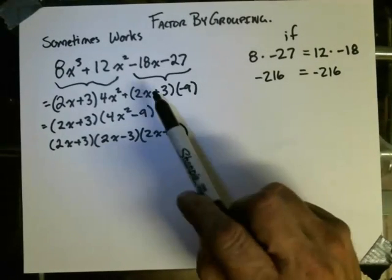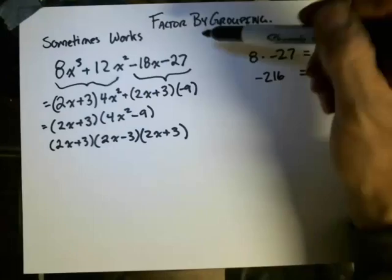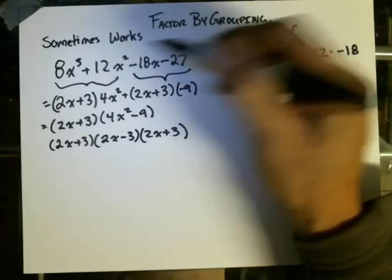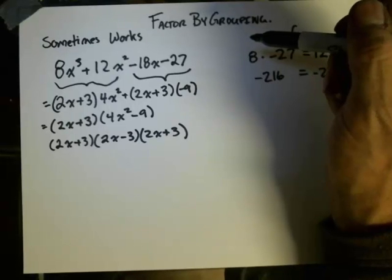So the first number times the last number is equal to the second number times the third number. You've got it made. You can factor by grouping.